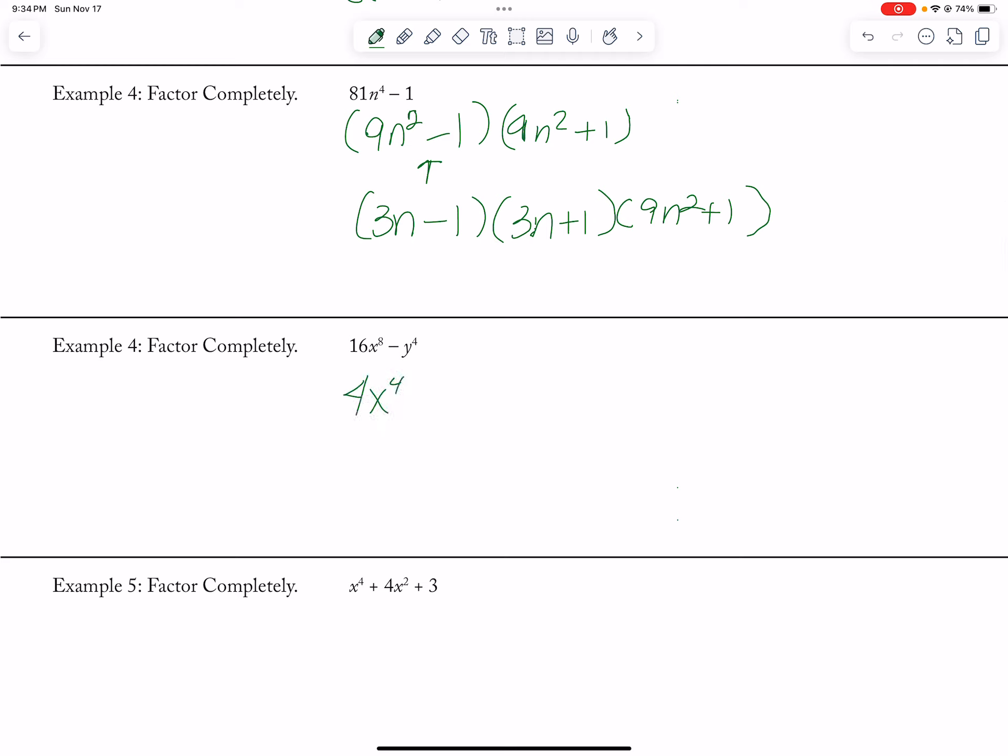Here, 4X to the 4th minus Y squared, 4X to the 4th plus Y squared. So then I'm left with a 2X squared minus Y, 2X squared plus Y. Because that factors to a difference of squares. And then I just bring down my 4X to the 4th plus Y squared.